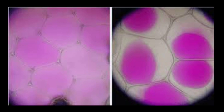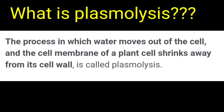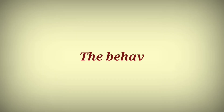These protoplasts clearly get shrinked and they are away from the cell walls. This is the clear definition of plasmolysis: the process in which water moves out of the cell and the cell membrane of a plant cell shrinks away from its cell wall.